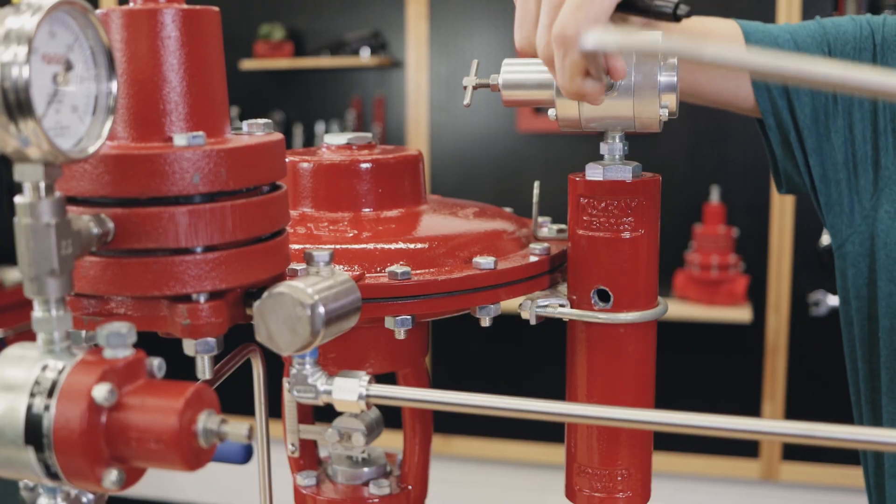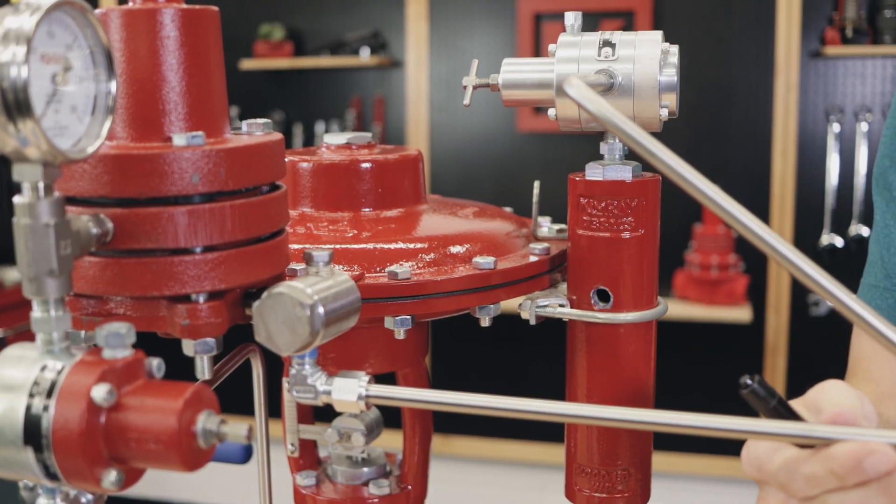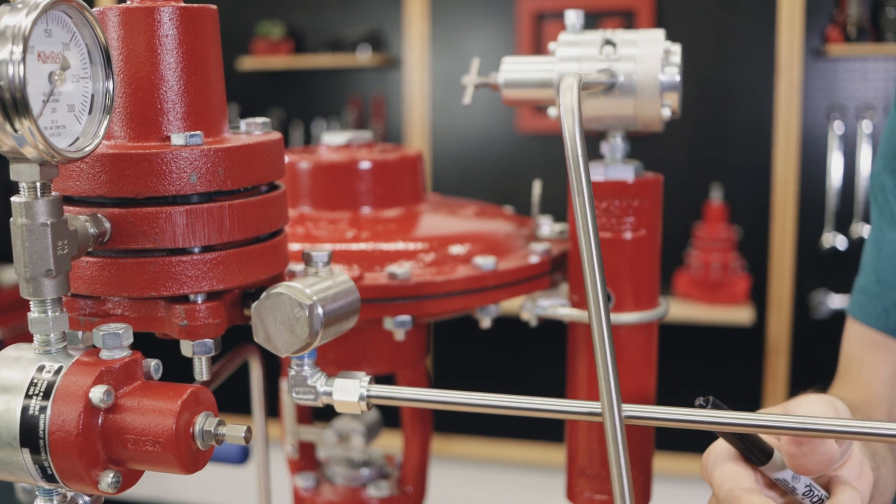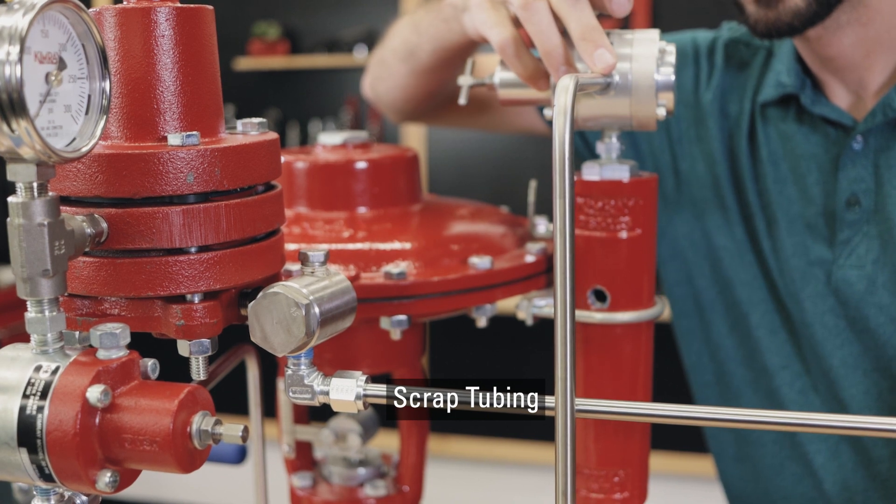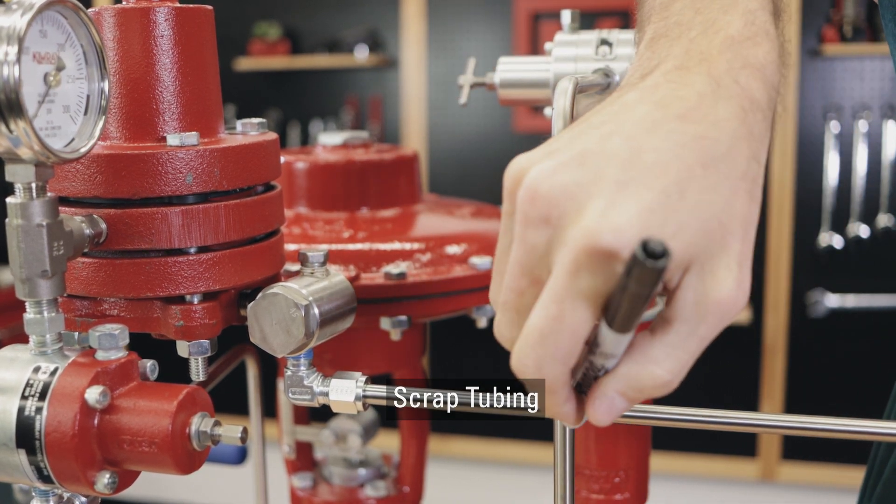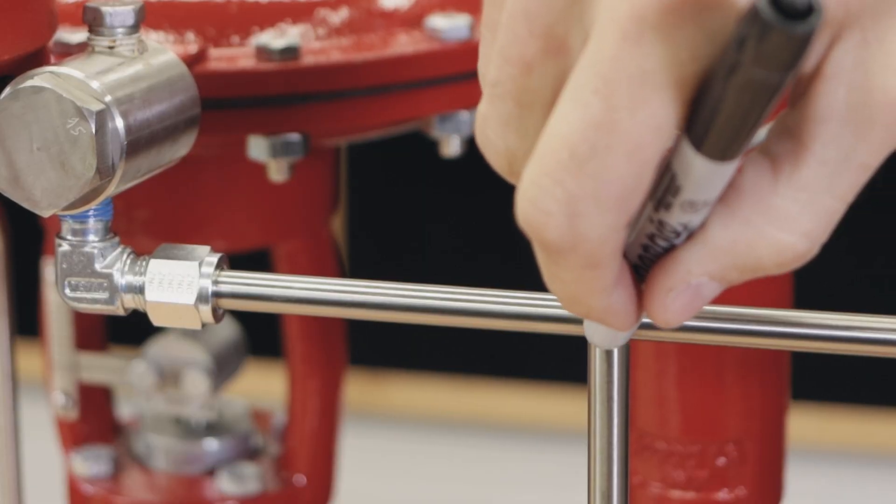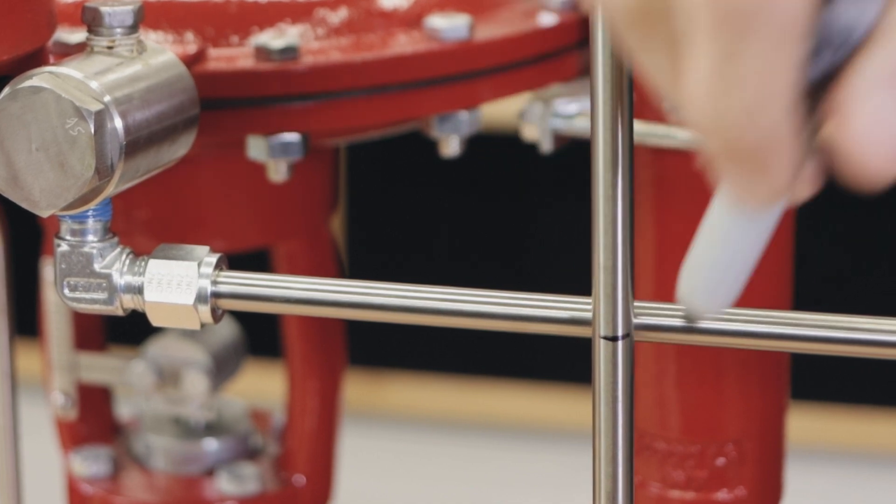For our second 90 degree bend, accuracy is more important now because we must reach our fitting perfectly. Return the bent tube to the fitting and slightly move the scrap piece of tubing so it can rest in its final position. Mark the center line on your tubing for your second 90 degree bend.